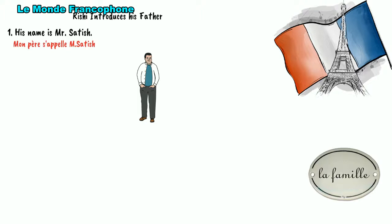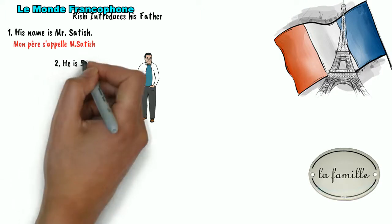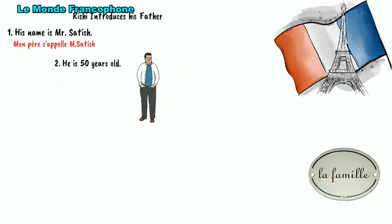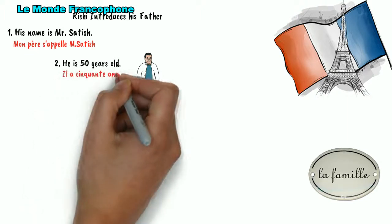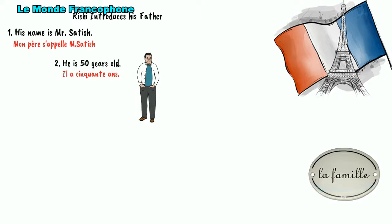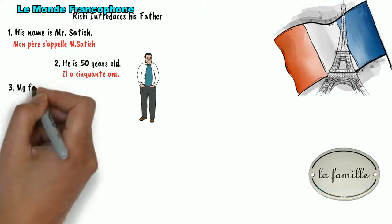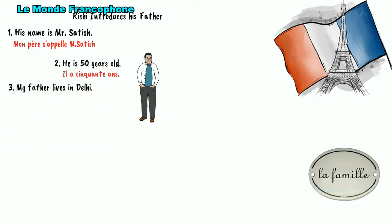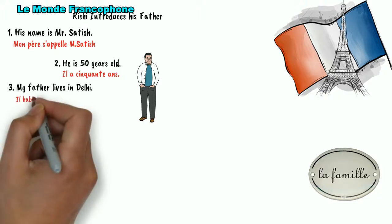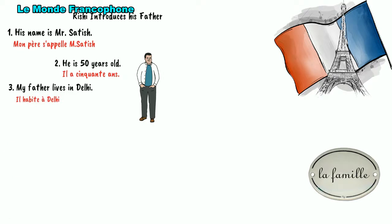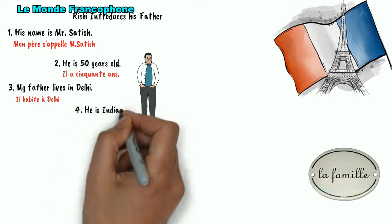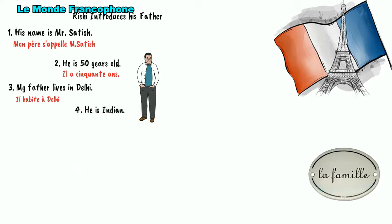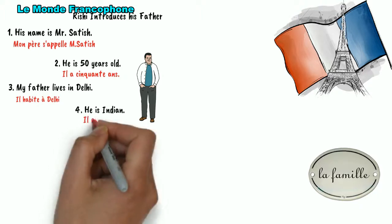The second sentence would be his age — he is maybe 50 years old. So Rishi would say: Il a cinquante ans. The third phrase could be where he lives. Rishi is putting up in Delhi, so his father is also in Delhi. So he would say: Il habite à Delhi. The fourth one could be his nationality. My father is Indian. So: Il est indien.